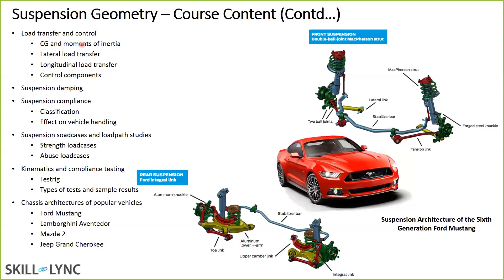We'll cover suspension damping and the shock absorber, then look at the elastic part — bushings — and how bushings influence vehicle handling behavior. We'll also study suspension load cases and load paths. This helps design suspension components. The input to an FEA model primarily comes from a vehicle dynamics tool like Adams, defining strength load cases — things the suspension sees daily like speed bumps, braking, and cornering — and abuse load cases, like hitting a very severe pothole.